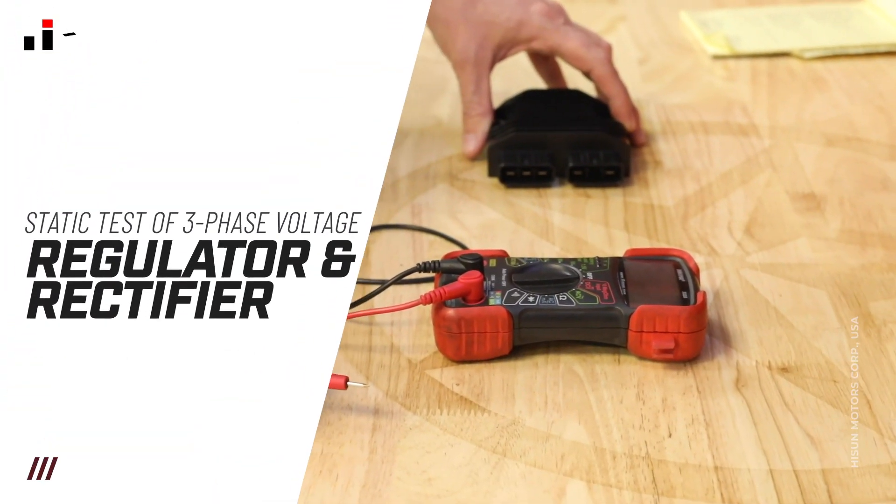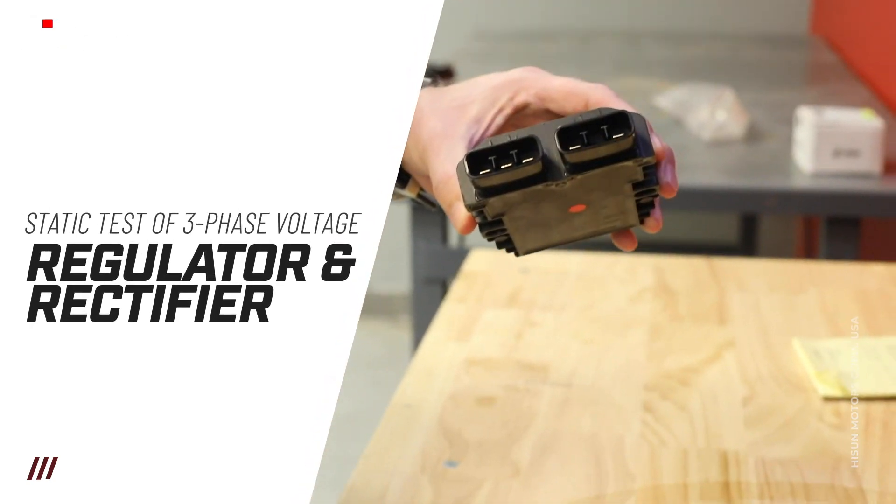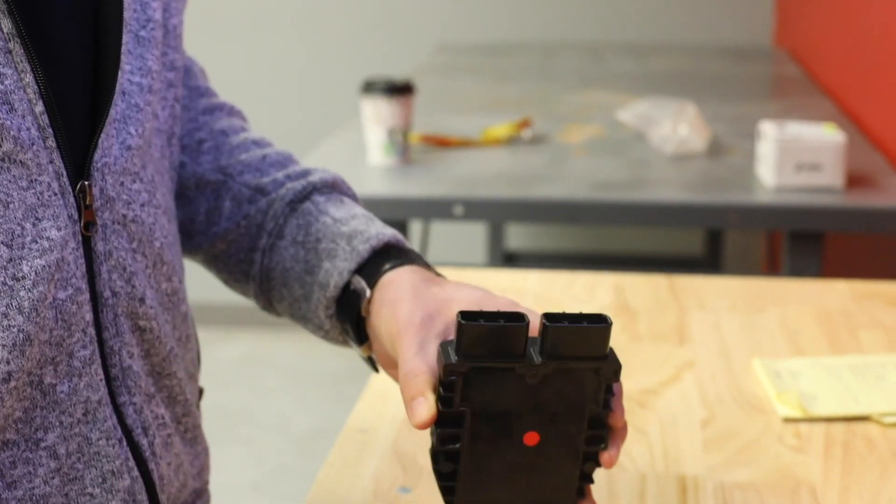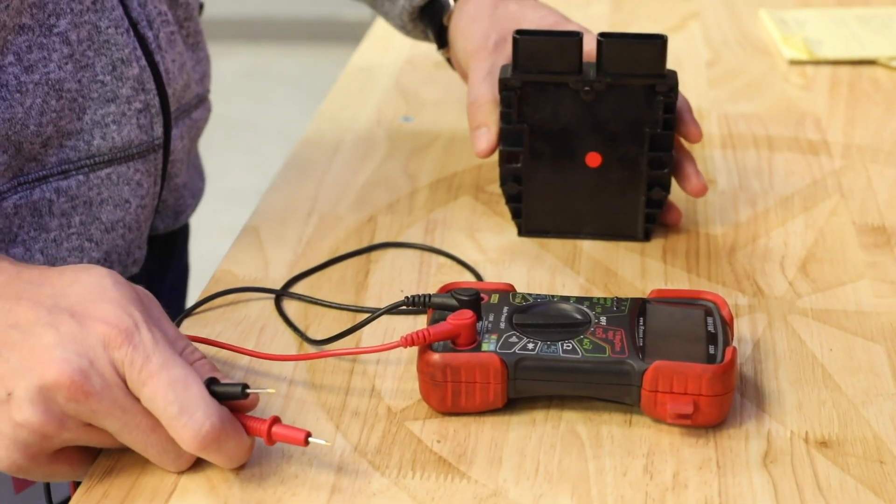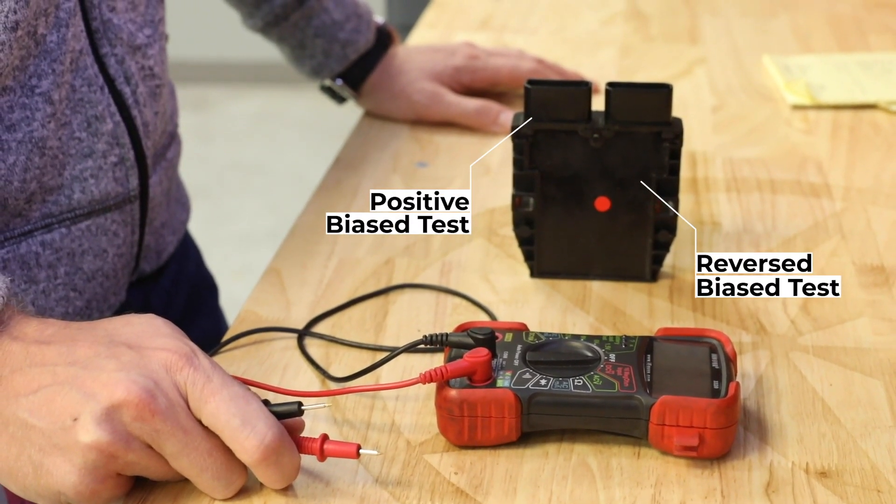All right, so today we're going to be testing to make sure that our three-phase voltage regulator rectifier is working properly. We're going to do two things: a positive bias test and a reverse bias test as well.